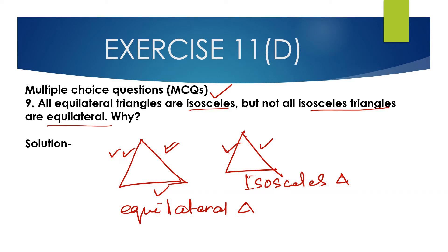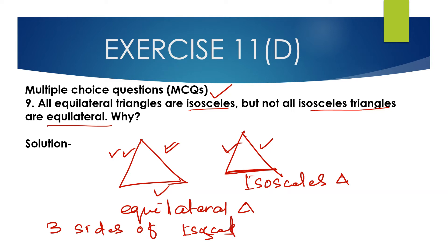But not all isosceles triangles are equilateral. In an isosceles triangle, two sides are equal, but the third side can be equal or not equal. So the three sides of all isosceles triangles are not equal — all isosceles triangles are not equilateral.